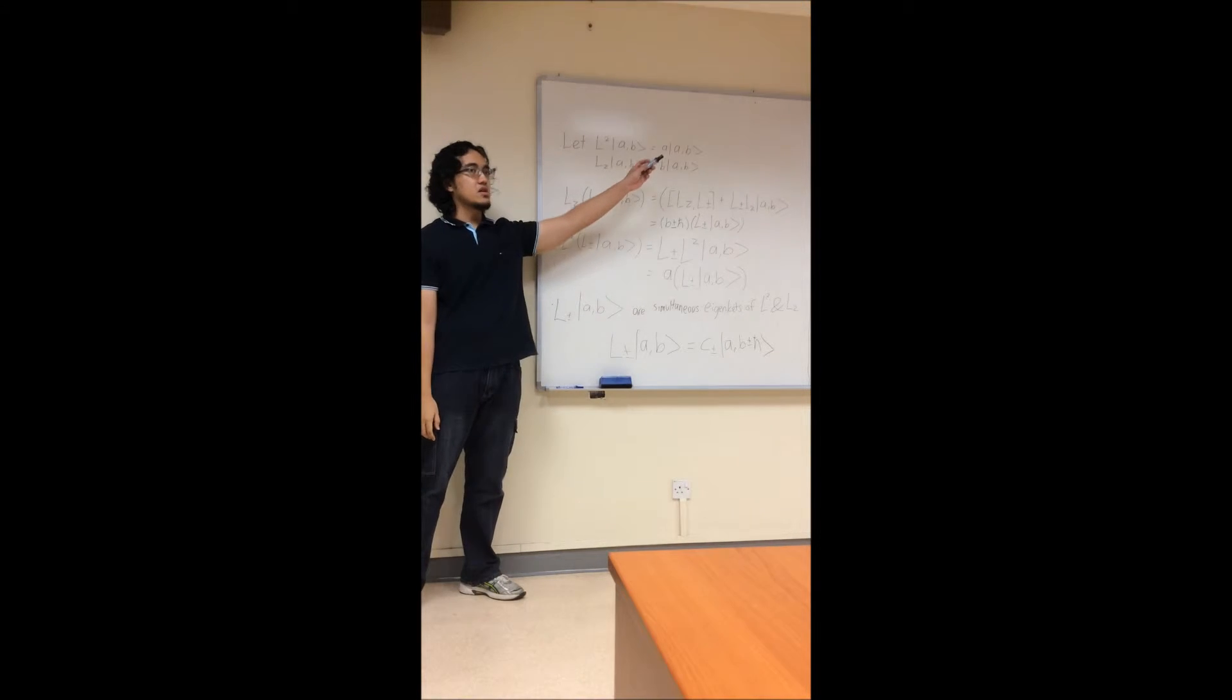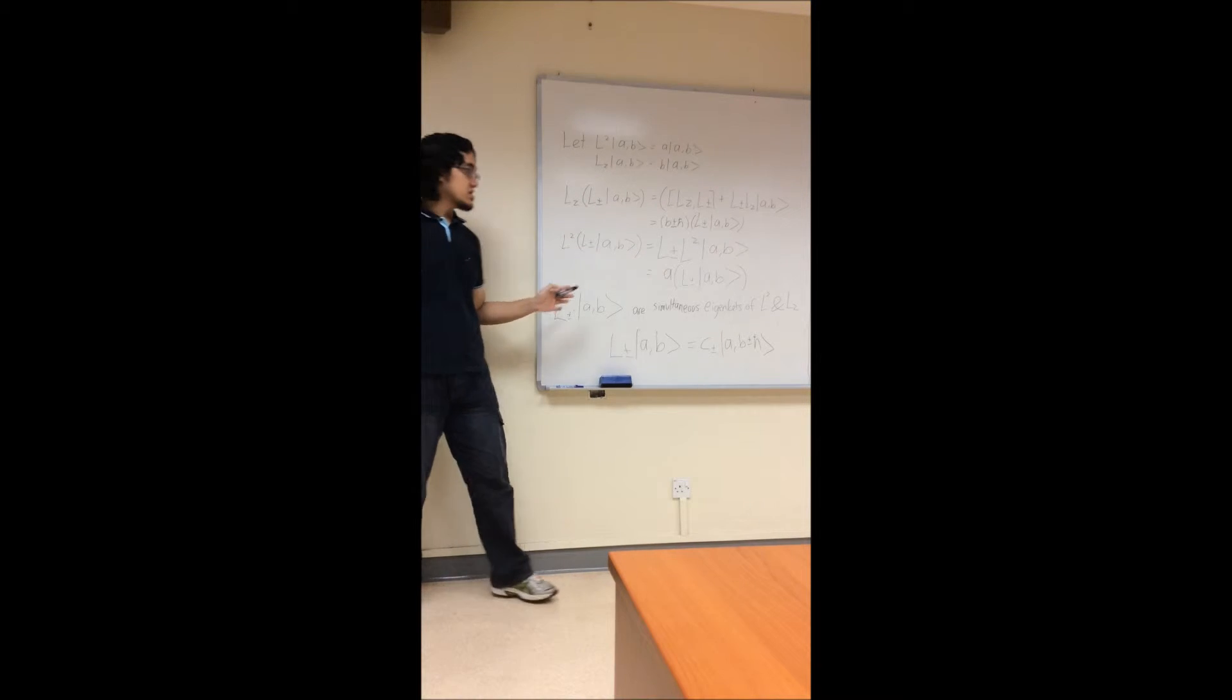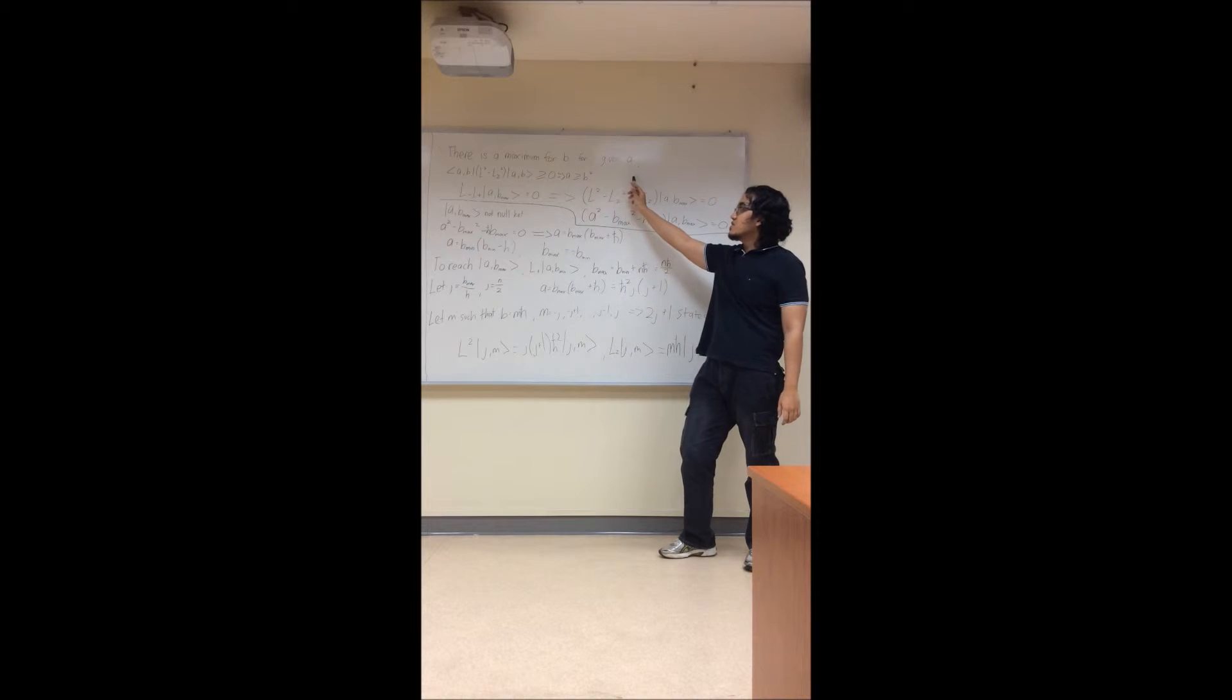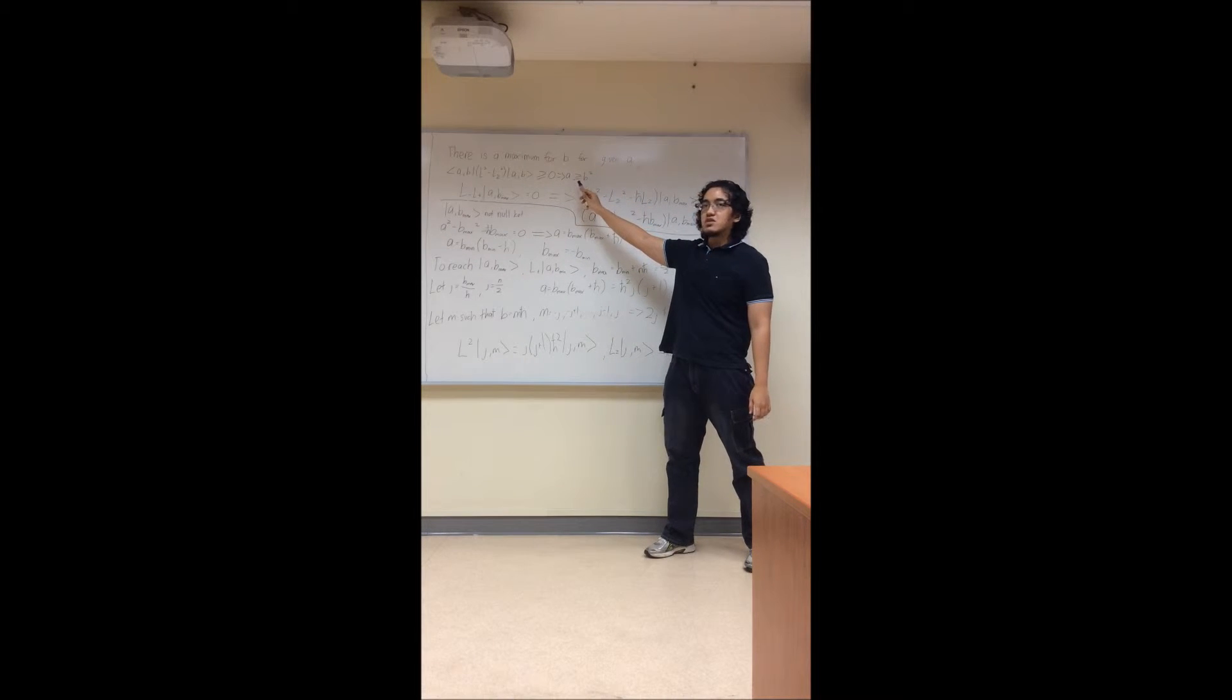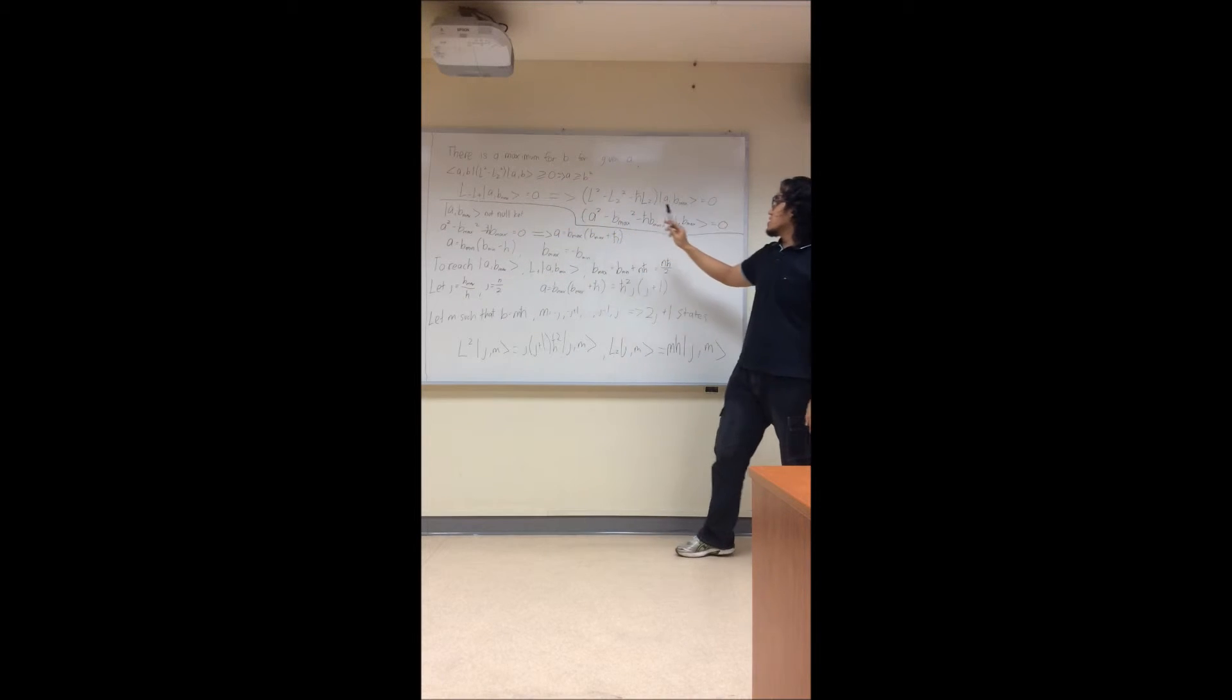Okay, so for Sakurai, they let the eigenvalues be A and B initially, and from the commutation relations, we can see that the step-up operators can be seen as the eigenkets of L² and LZ. So there's a maximum B for any given A. So we get A is greater than or equal to B². So from this equation, we are able to get this equation.